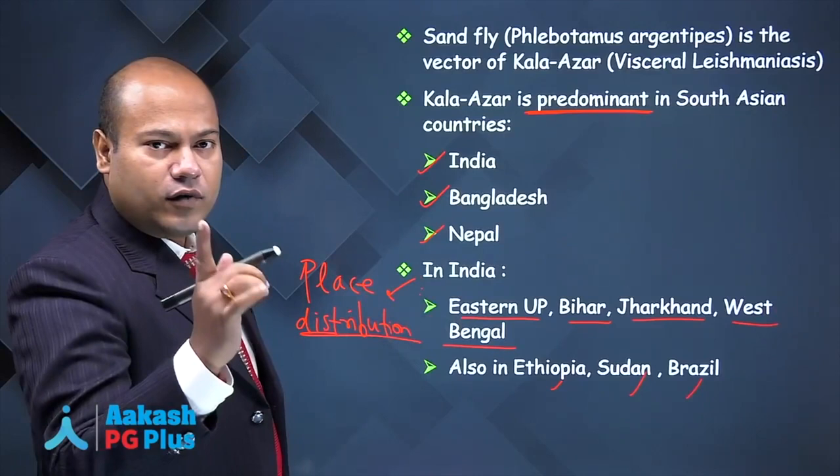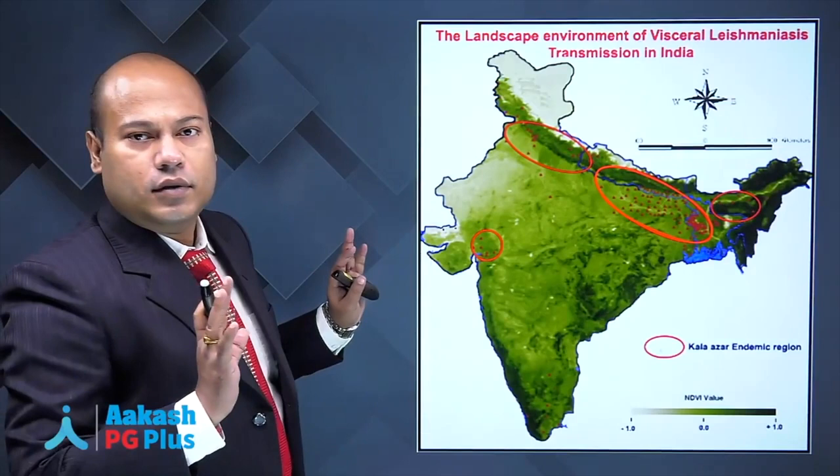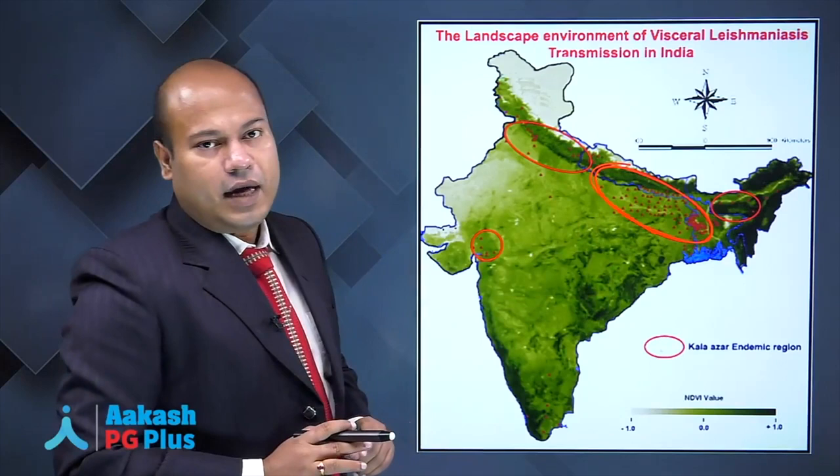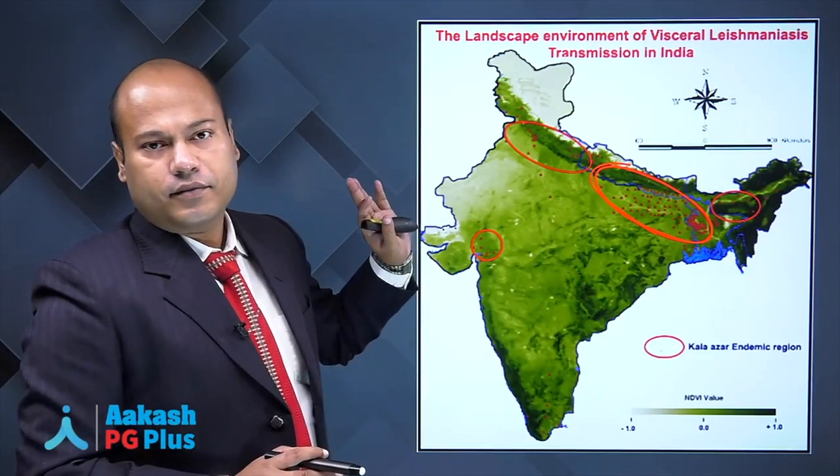The place distribution of Kalazar is vital for your examination. A question can come with a map where a red circle marks an area, and you have to identify the disease. From the place distribution, you identify it as Kalazar. These types of questions can and will come.